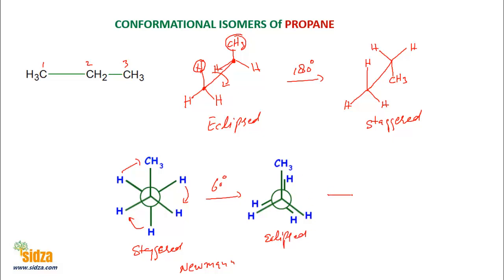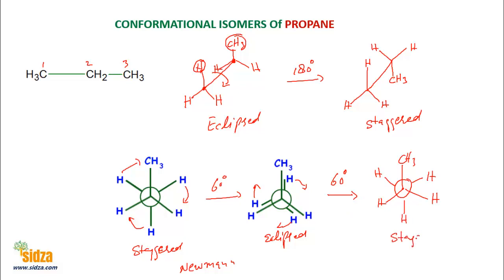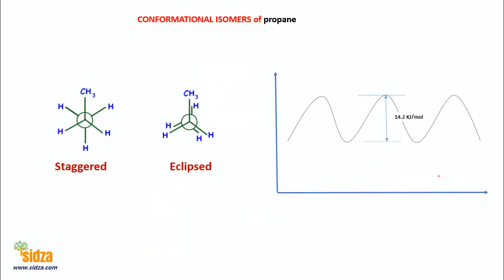If you do a further 60-degree rotation in the back carbon, this hydrogen shifts here, this shifts here, and this shifts here — so by a further 60 degrees you get again a staggered conformation. And another 60-degree rotation gives you eclipsed again. So propane has two conformational isomers: eclipsed and staggered, with staggered being more stable.